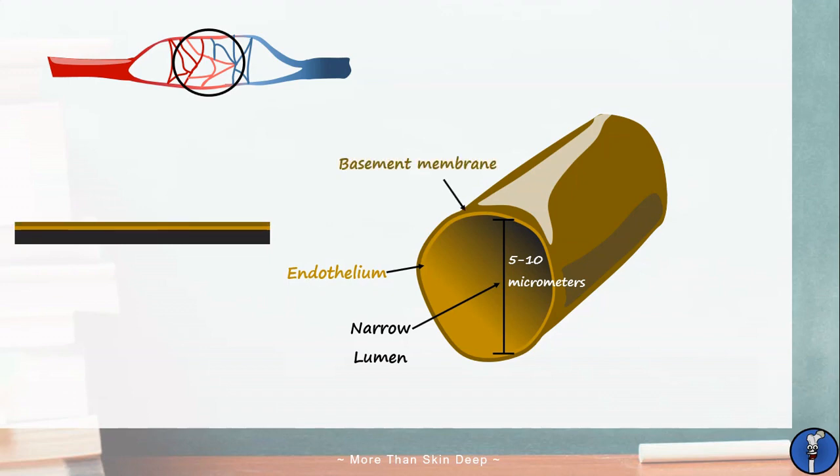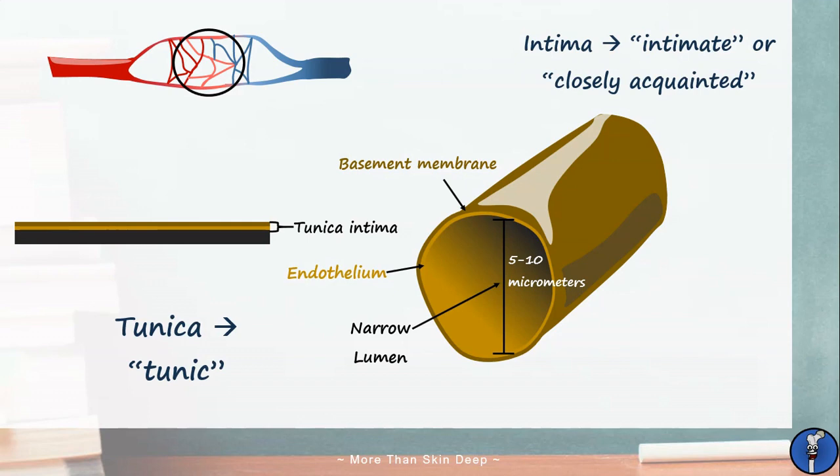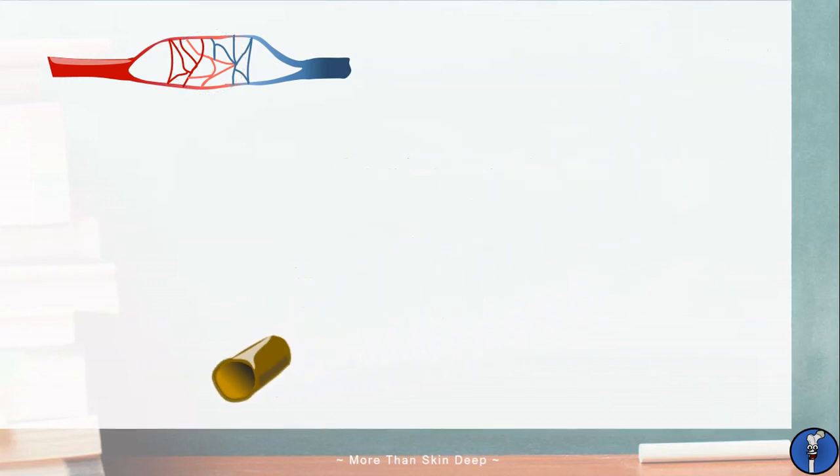Now this endothelium plus basement membrane structure will remain constant throughout the entire circulatory system. From here on out we're going to refer to these structures together as the tunica intima. This comes from the words tunic as in the type of clothing and intimate meaning closely acquainted. Now capillaries get a little bit more specialized than this but we'll cover that later.